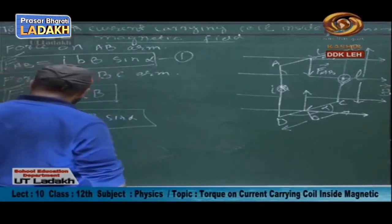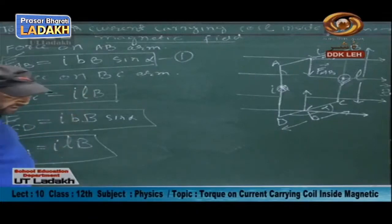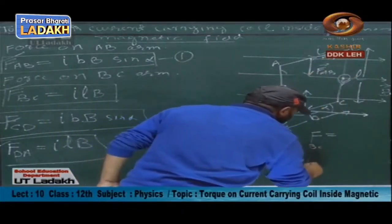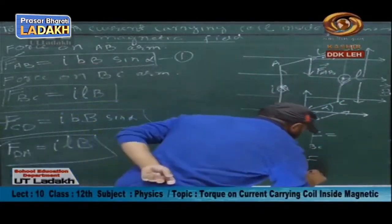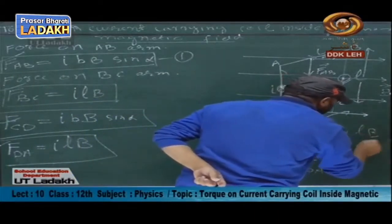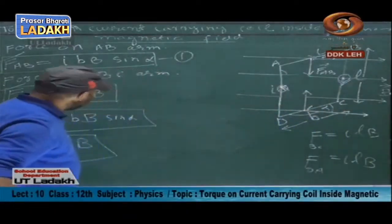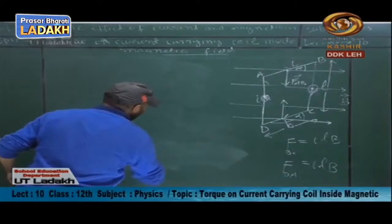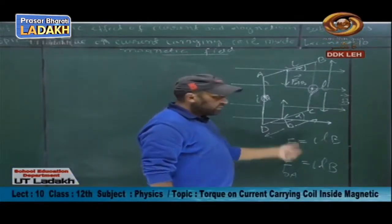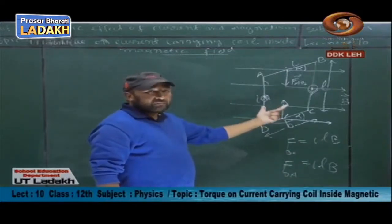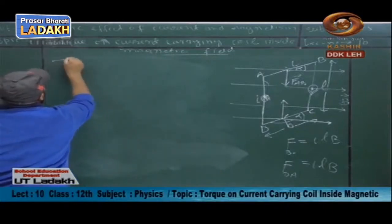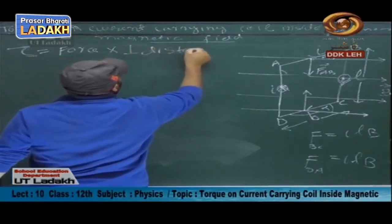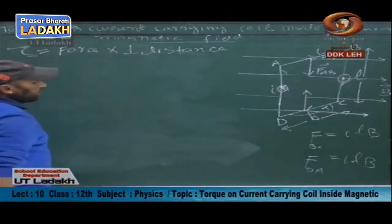So the net effect comes from the forces on BC and DA. The force on BC is ILB and the force on DA is ILB. These two forces form a couple which rotates the coil.